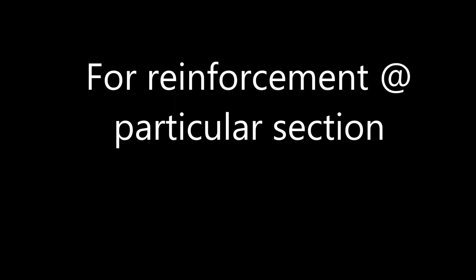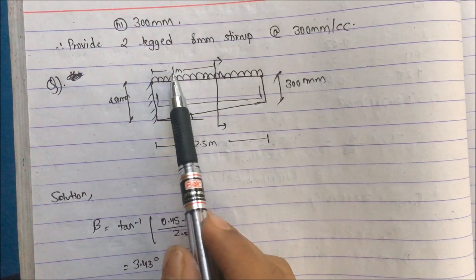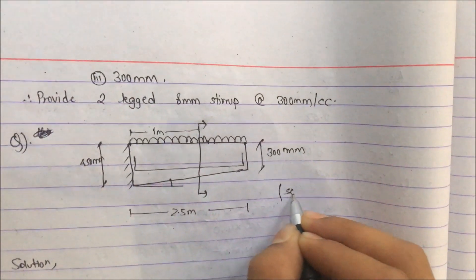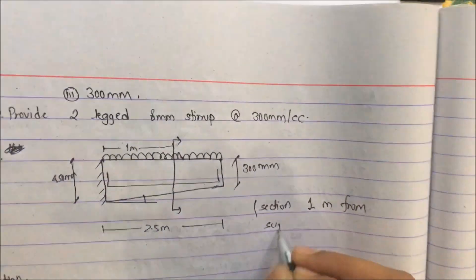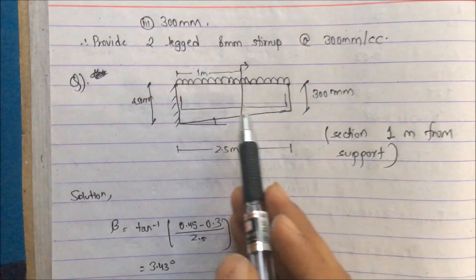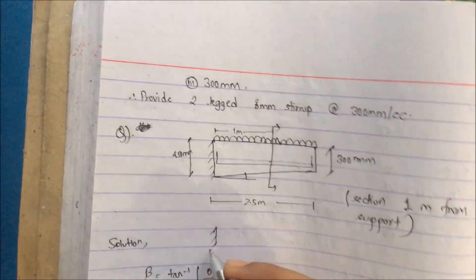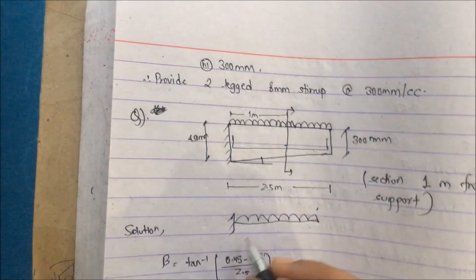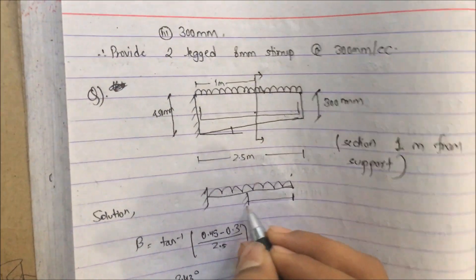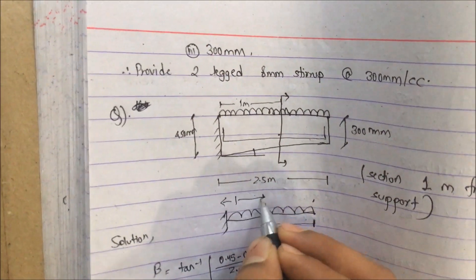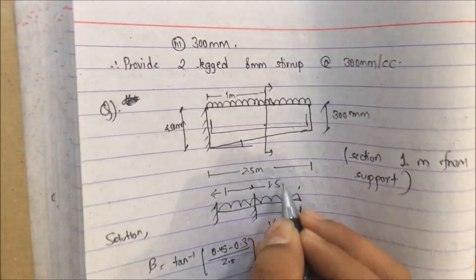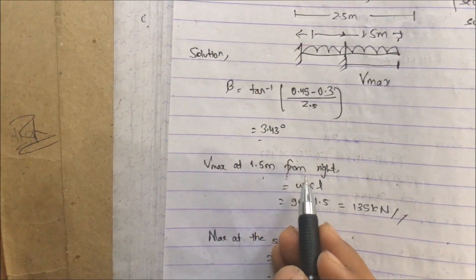For the next part, we design shear reinforcement at a section 1 meter from the fixed end. Beta remains 3.43 degrees. The distance from the free end is 1.5 meters. The UDL acts over the beam with total span 2.5 meters, so V_max at 1.5 meters from the free end = w × L = 90 × 1.5 = 135 kN.